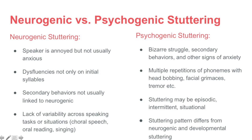Some possible psychological diagnoses that could lead to psychogenic stuttering include conversion reaction, anxiety, depression, personality disorder, drug dependence, and post-traumatic neurosis.